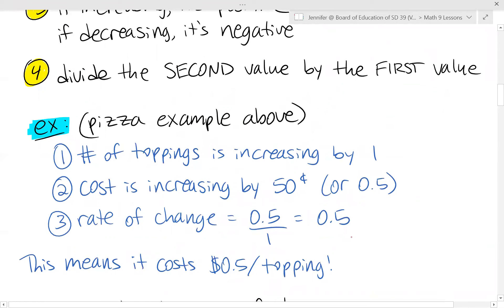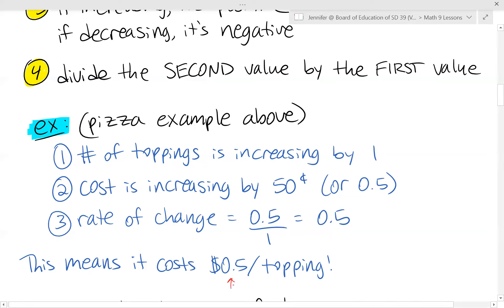So the rate of change for the pizza situation is 0.5, which represents that it costs 50 cents per topping. This might seem basic, but what we've found is the relationship between how much the cost is changing compared to how much the number of toppings are changing.